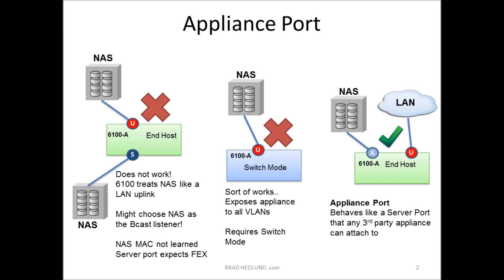Secondly, when you're in switch mode, on the uplinks, all uplinks are forwarding for all VLANs — it's not something that you can prune or filter. Any VLANs defined in UCS will be forwarding on all uplinks when in switch mode. So if you had a NAS appliance on VLAN 10 attached to an uplink port, that NAS appliance would be exposed to all of the VLANs inside UCS, and all of the broadcast traffic for all VLANs would be forwarded to the NAS appliance — and that's obviously not a good thing.